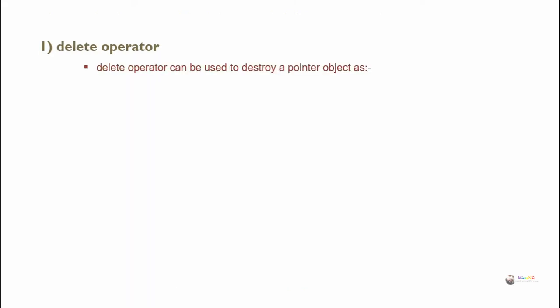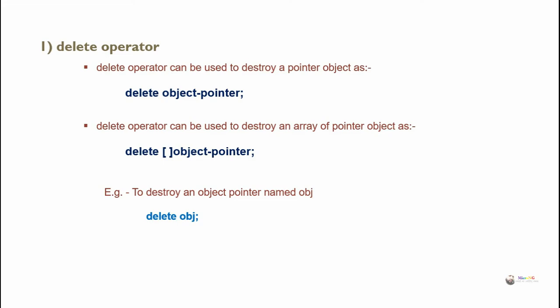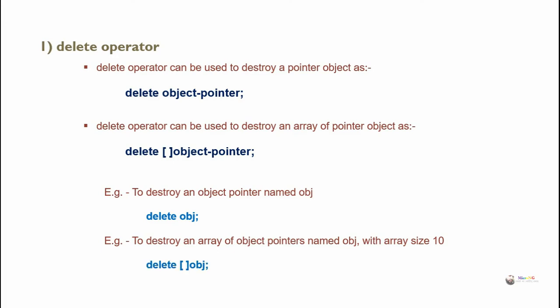The delete operator is used to destroy a pointer object as: delete object pointer. To destroy an array of pointer objects, use: delete followed by square brackets and the object pointer name. For example, to destroy a single object pointer named obj: delete obj. To destroy an array of object pointers named obj, use: delete square bracket obj. When deleting an array of pointer objects, we do not need to mention the total size — the square brackets indicate that obj is an array of pointer objects.